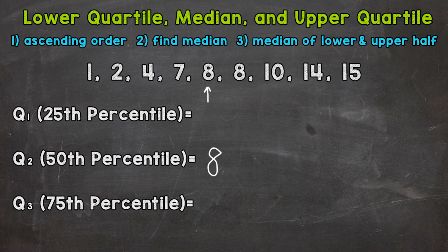Now that we have the middle point, we need to find the median of the lower half and the median of the upper half. The median of the lower half is going to give us the lower quartile. And the median of the upper half is going to be the upper quartile.